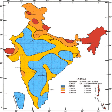Zone 2 is liable to MSK V or less and is classified as the Low Damage Risk Zone. The IS code assigns a zone factor of 0.10. The maximum horizontal acceleration that can be experienced by a structure in this zone is 10% of gravitational horizontal acceleration.